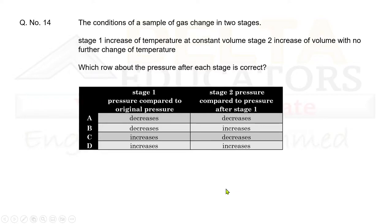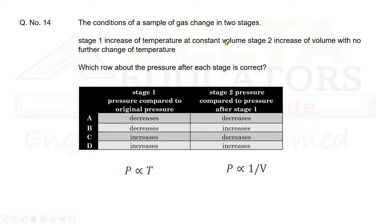Question 14: A gas changes in two stages. Stage 1: temperature increases at constant volume. By the pressure law, pressure increases with temperature at constant volume. Stage 2: volume increases at constant temperature. By Boyle's law, pressure and volume are inversely proportional, so pressure decreases. In stage 1 pressure increases, and in stage 2 pressure decreases, which matches option C. Correct option is C.